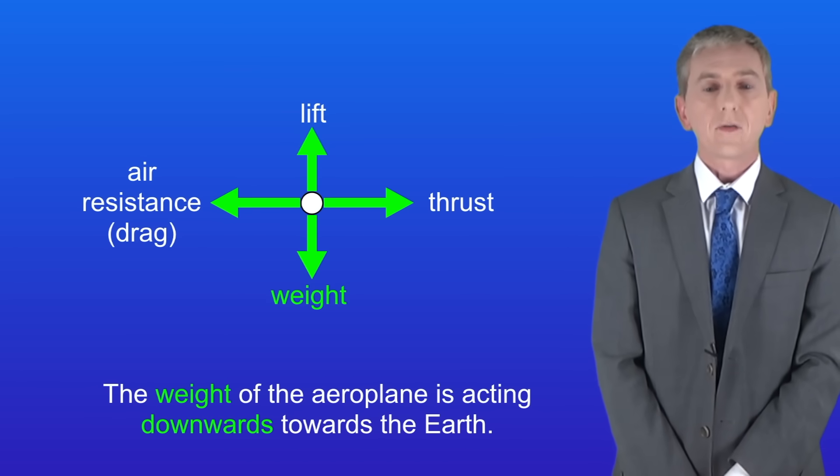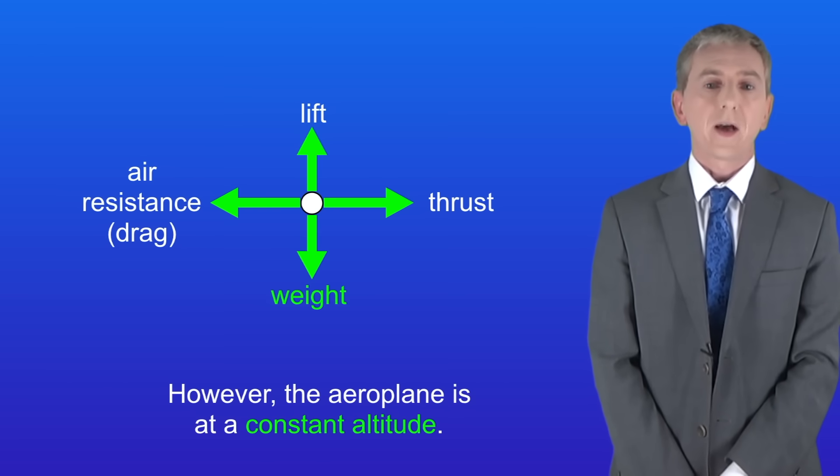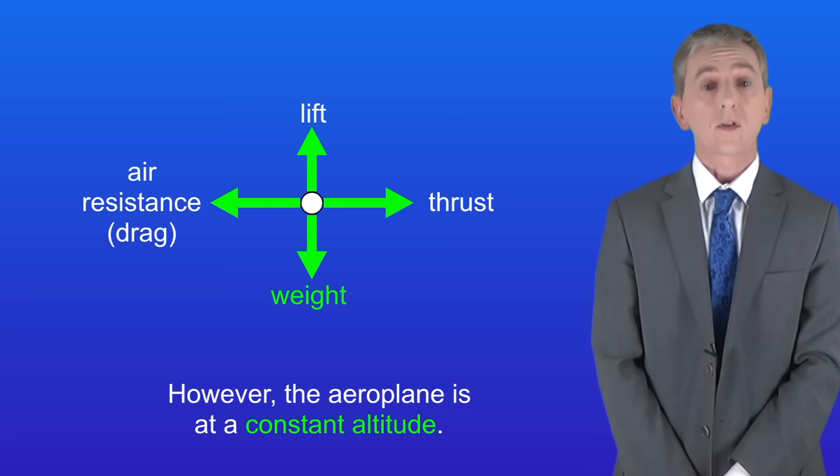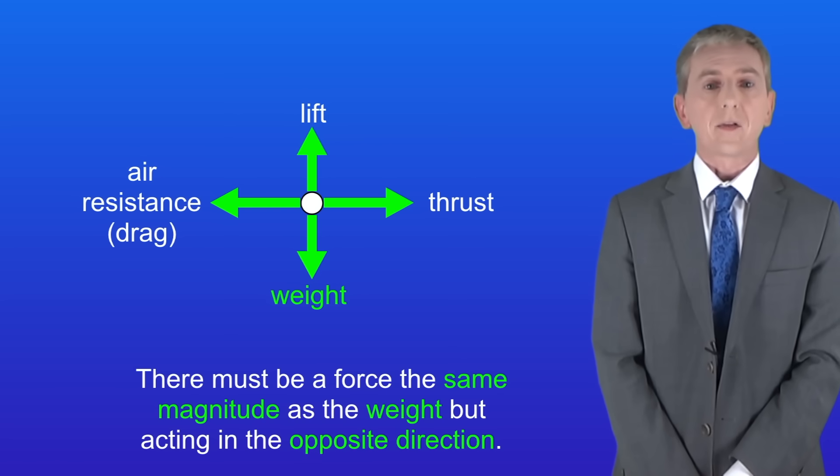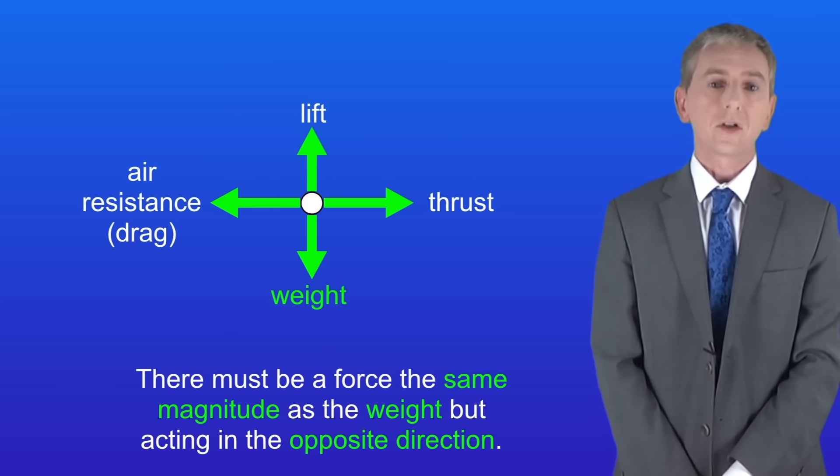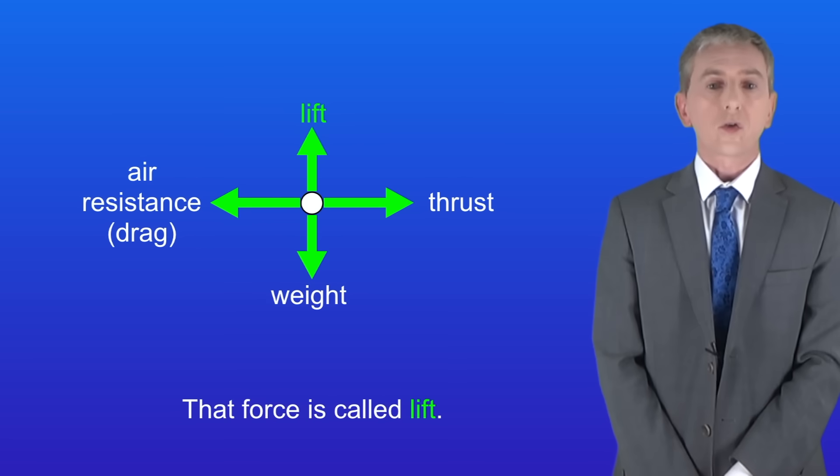As you can see, the weight of the aeroplane is acting downwards towards the earth. However, as we said, the aeroplane is at a constant altitude. So that means that there must be a force the same magnitude as the weight but acting in the opposite direction. That force is called lift.